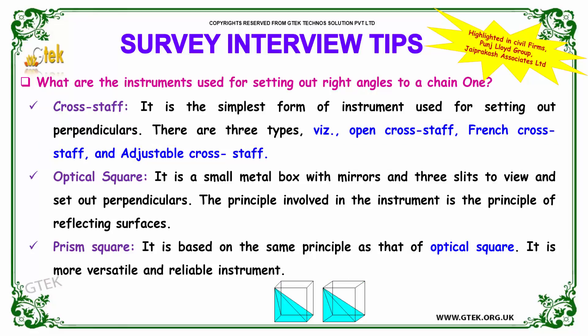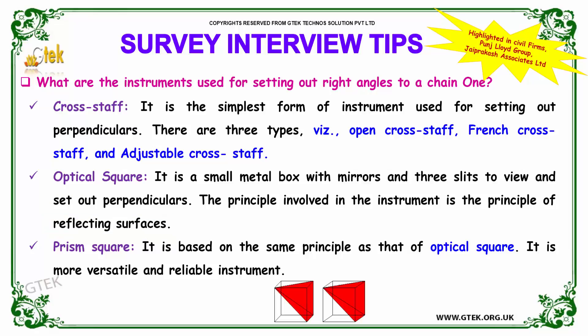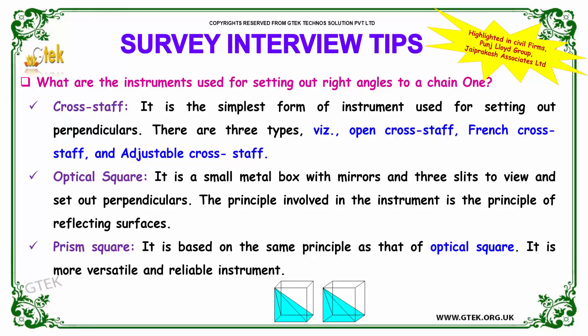The optical square is a small metal box with mirrors and three slits to view, used for setting out perpendiculars. The principle involved is the principle of reflecting surfaces. The prism square is based on the same principle as the optical square. It is more versatile and a reliable instrument, also used for setting out right angles.